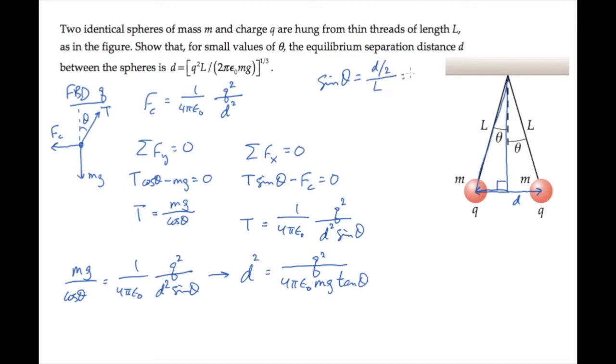For small angles, tangent theta is approximately equal to sine of theta, so we can replace tangent of theta with d over 2L.